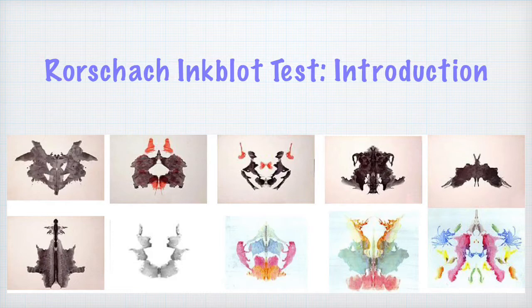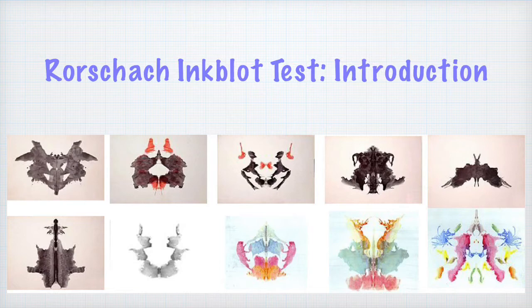These images do not have very clear forms. How one interprets each inkblot depends on how one thinks, what are the major concerns in the life of the person, what are the major thoughts and feelings. The inner world of the person — comprising feelings, memories, conflicts, major concerns, and ideas — all get reflected in the person's interpretation of these inkblots.